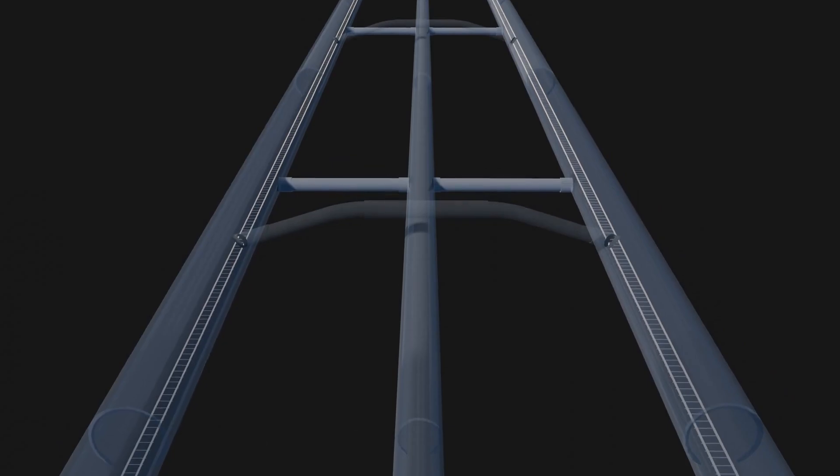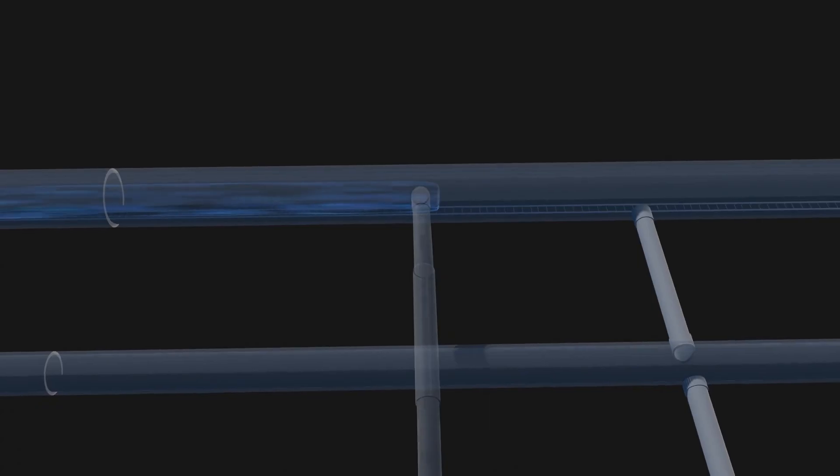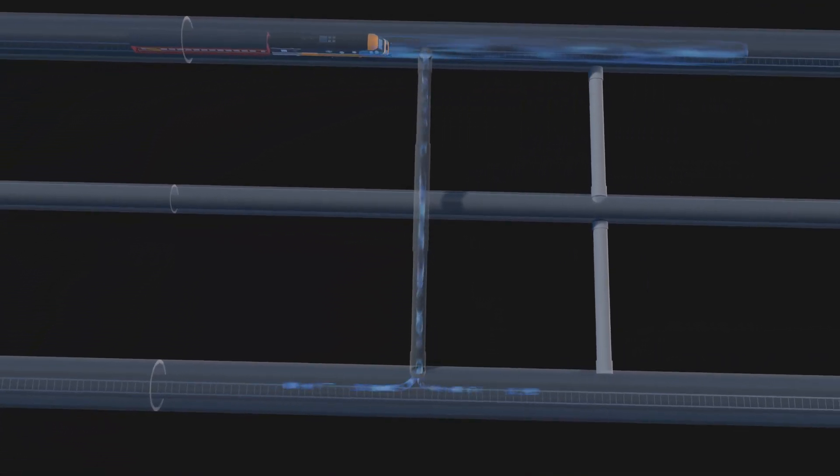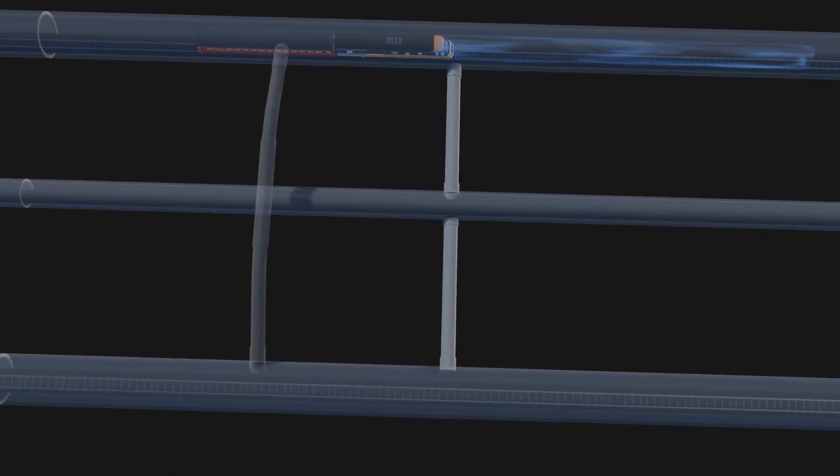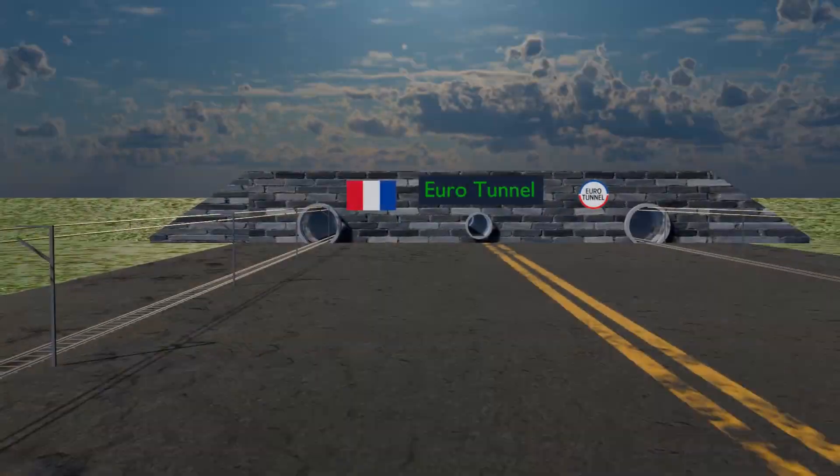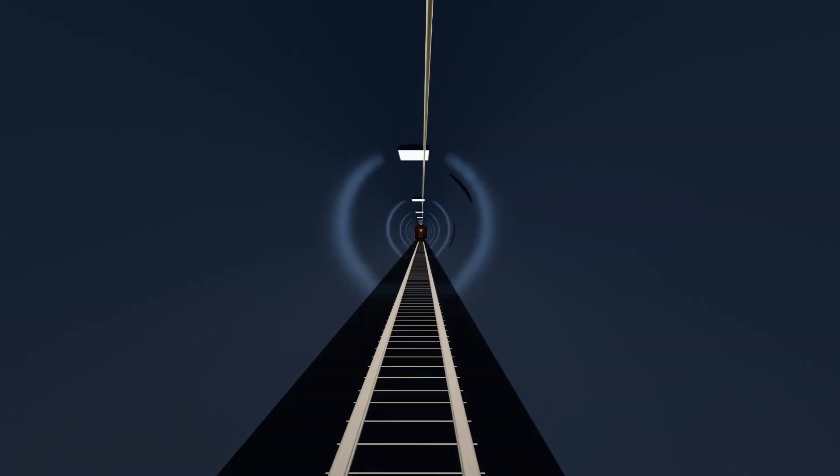To address this issue, piston relief ducts with a diameter of 2 meters were installed. These ducts allow air to flow through them when a train passes, distributing the air evenly to both sides of the tunnel. The only downside to these ducts is the flute-like sound they produce when a train is in motion. While noticeable, this sound does not affect the functionality or safety of the tunnel.